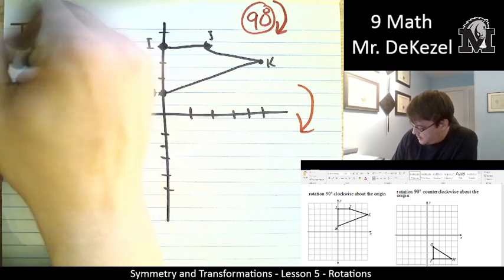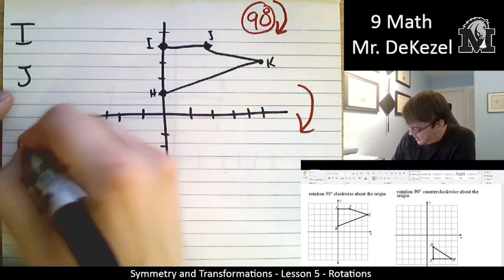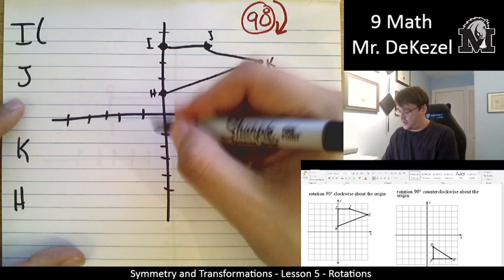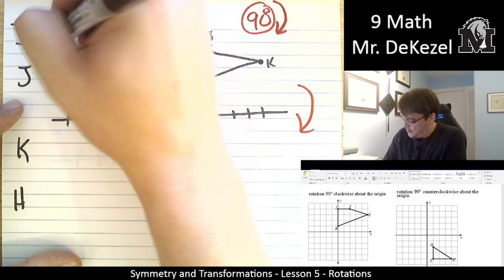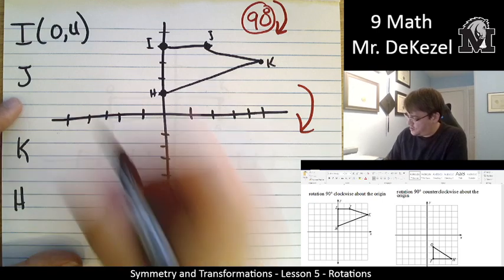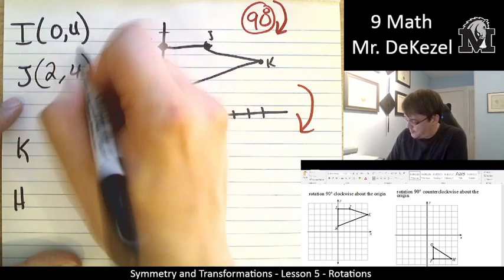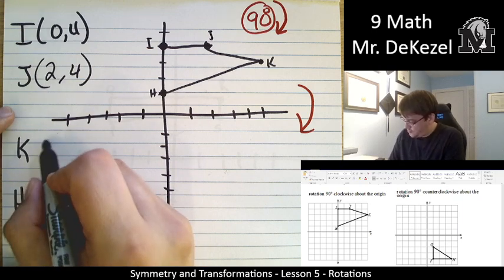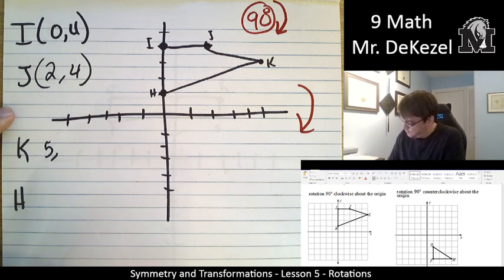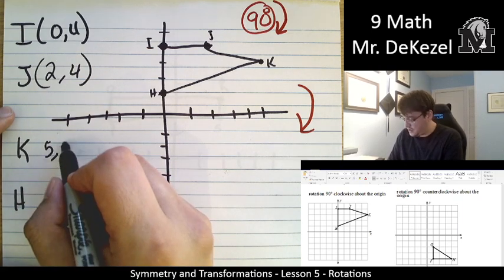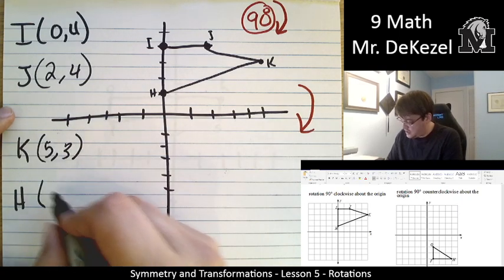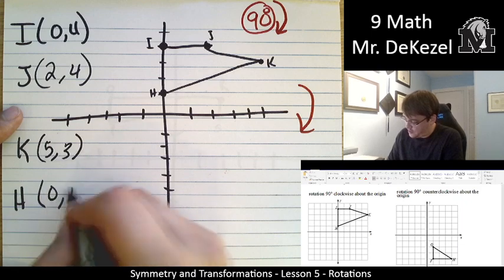I'm going to do i and j and then k and h. So i is 0 left to right and 4 up. J is 2 to the right and 4 up. K is 5 to the right and 3 up. And h is 0 left to right and 1 up.